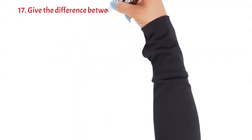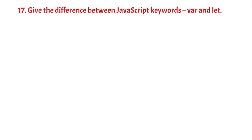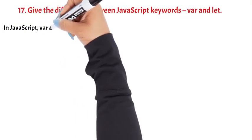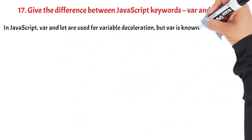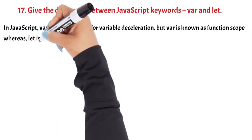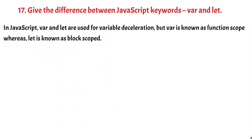Question 17: Give the difference between JavaScript keywords 'var' and 'let'. In JavaScript, both var and let are used for variable declaration. But var is known as function-scoped, whereas let is known as block-scoped. This is the end of our JavaScript interview questions. We hope you enjoyed learning with YQ Academy. Until next time, goodbye.